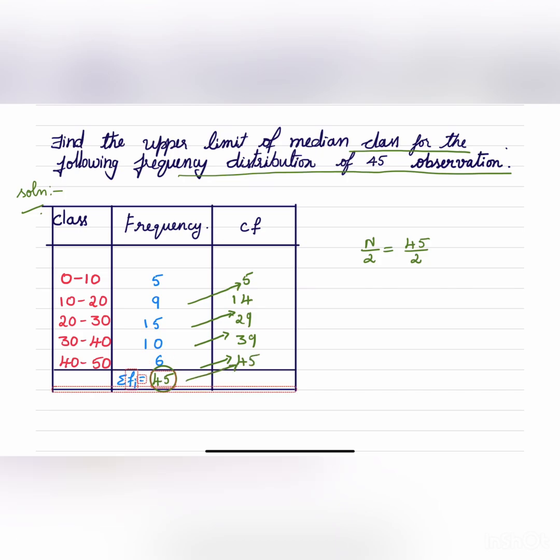Now n by 2, that is sigma F by 2, that is equal to 45 by 2 is 22.5. We have to check this 22.5 in CF column, that is cumulative frequency, and we don't have that 22.5. Then the next number is 29.